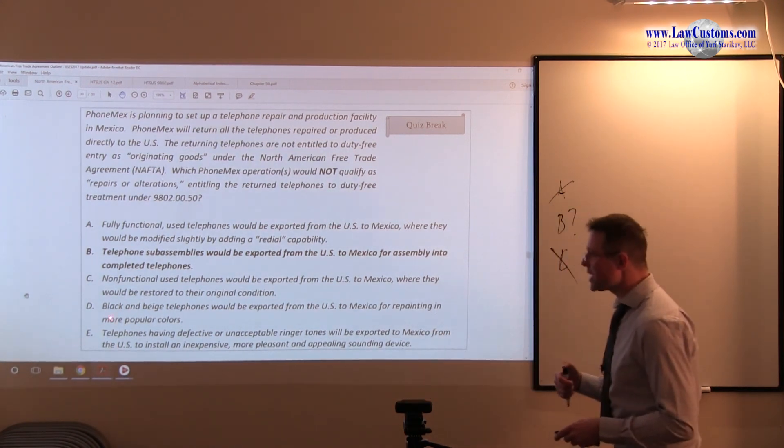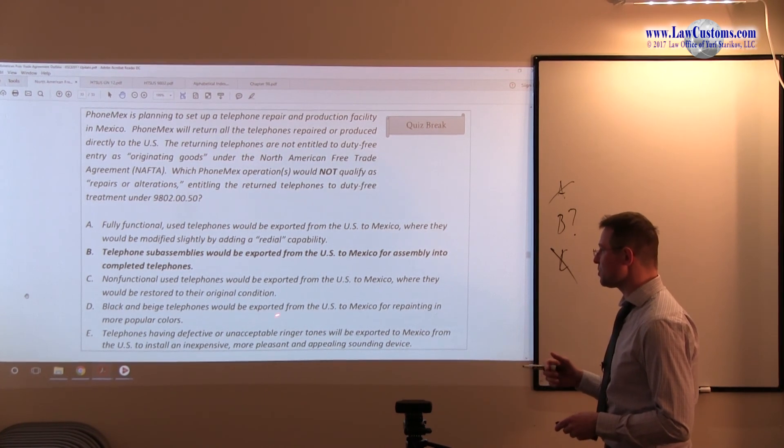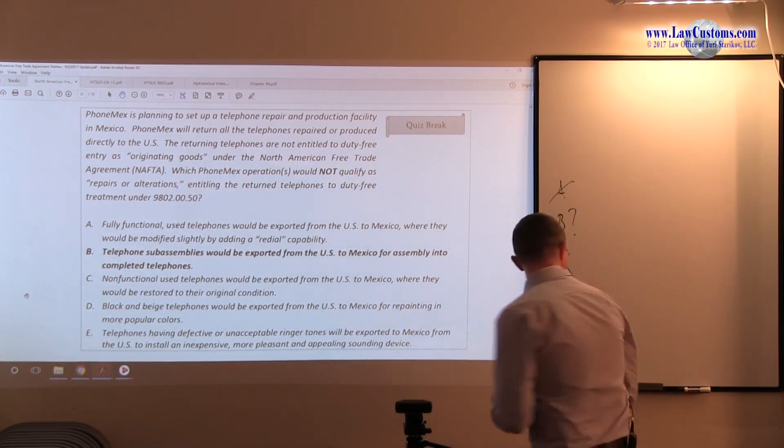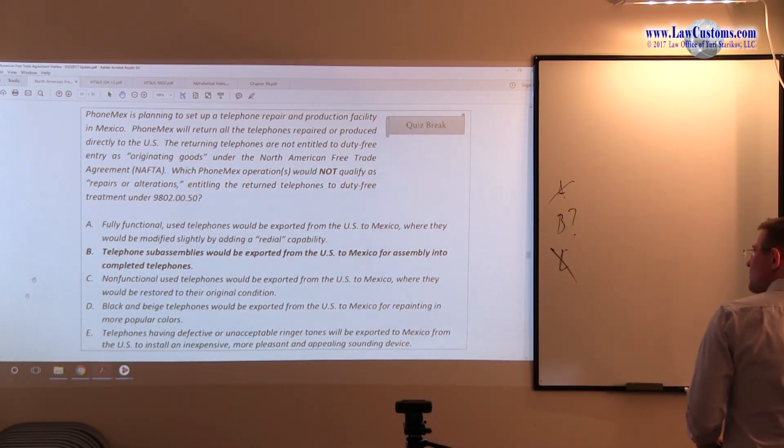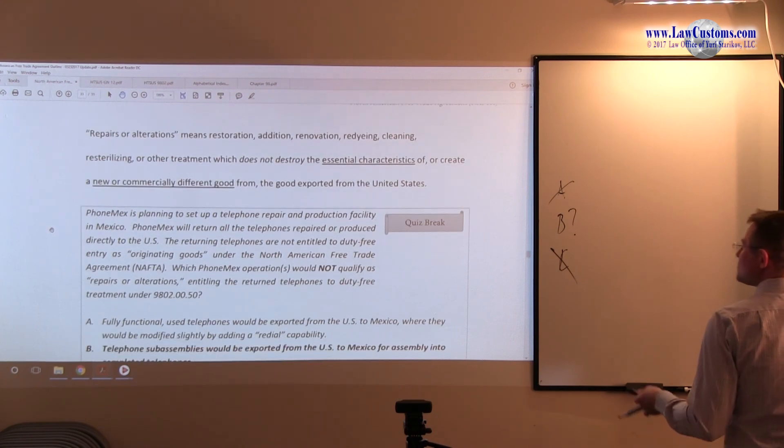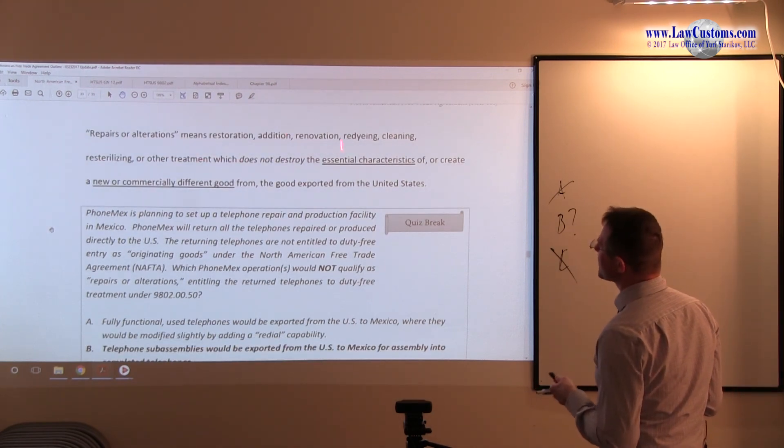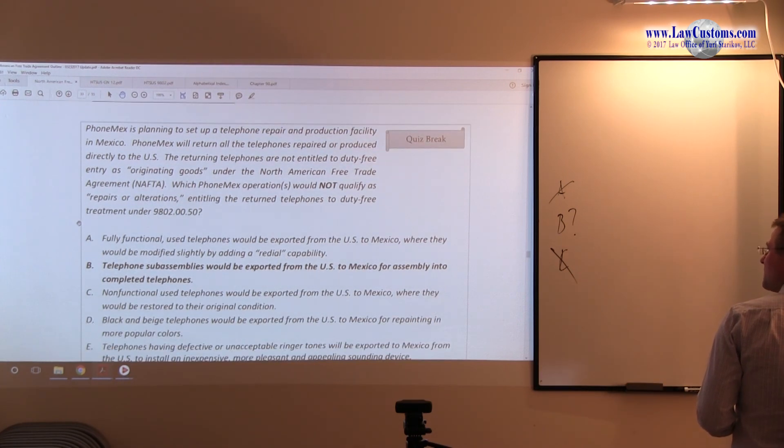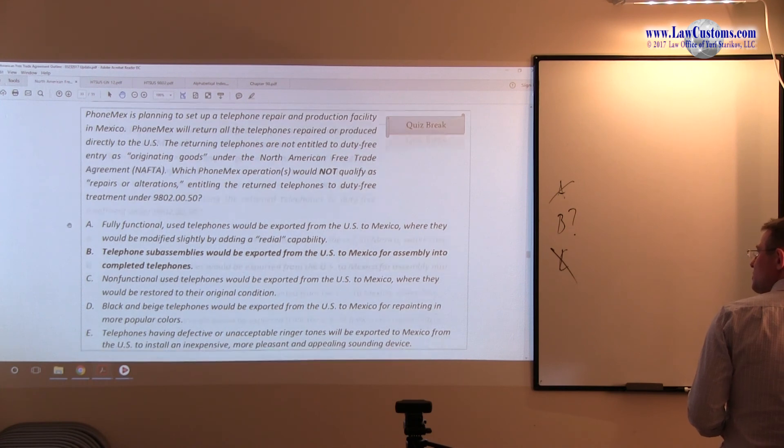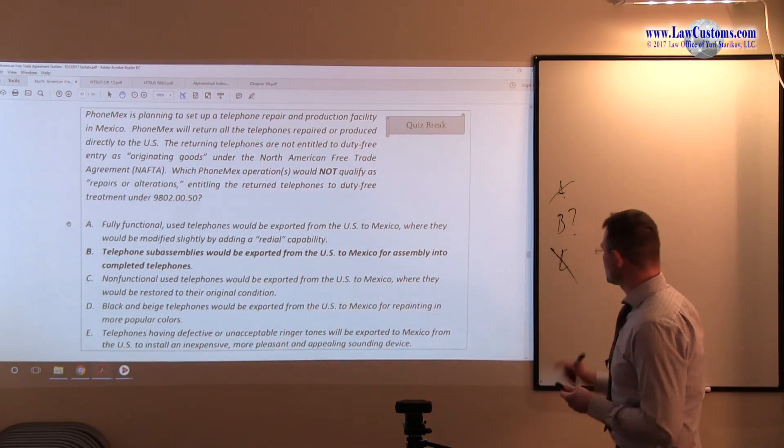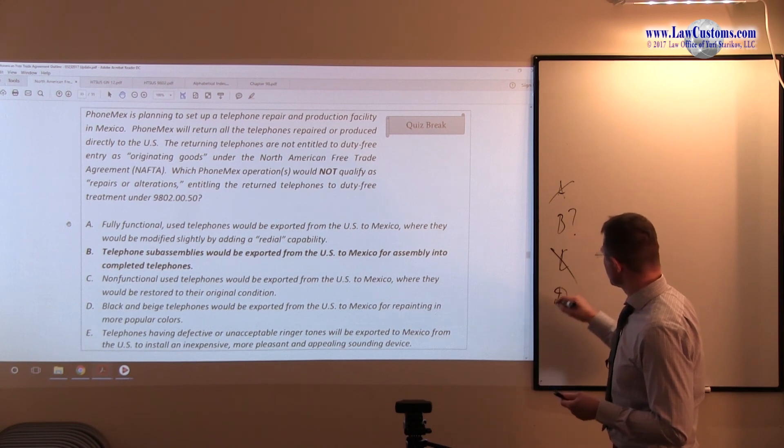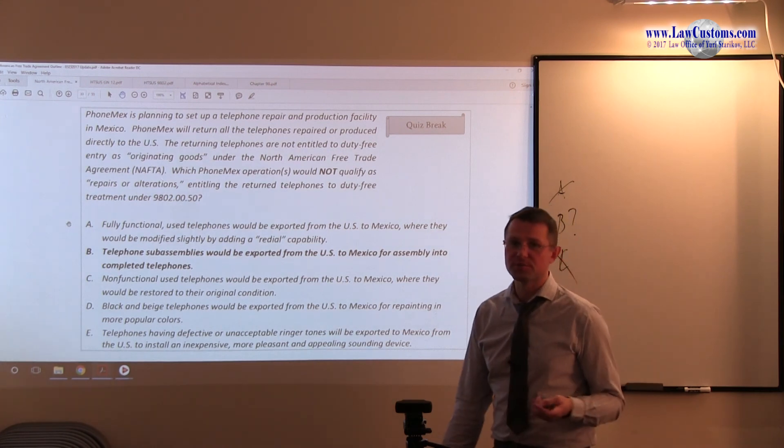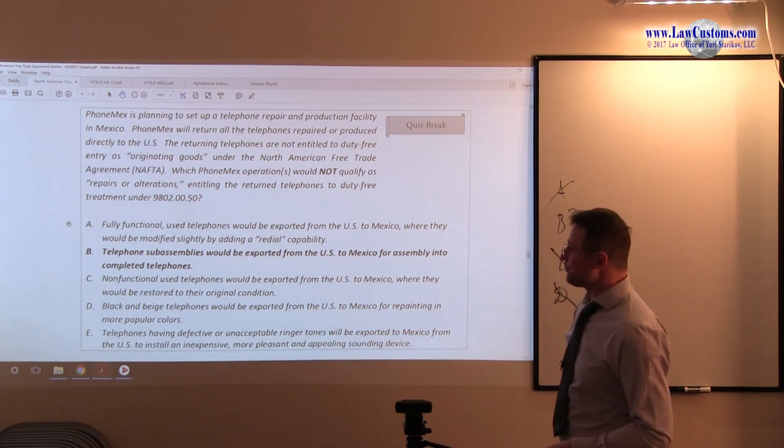D. Black and beige telephones would be exported from the United States to Mexico for repairing in more popular colors. So, this is explicitly provided in the buzzword choice, because we have redyeing, right? Redyeing, or changing the color, is something which is mere repair or alteration. So, D is obviously not our answer choice, because this is just mere alteration, if you will.